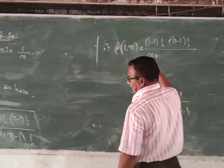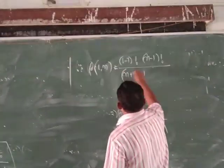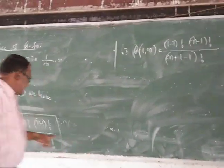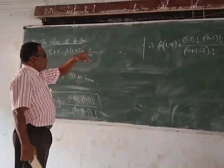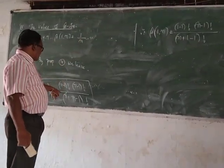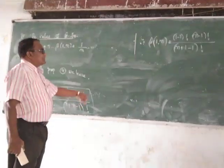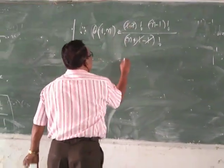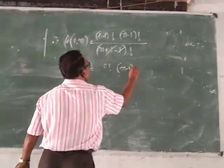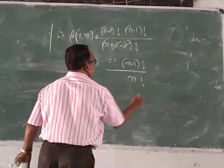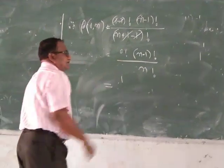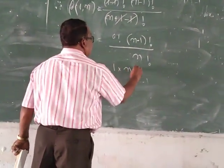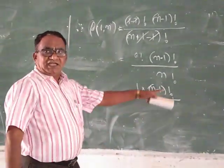This gives us (1-1)! · (n-1)! divided by n!. You can observe that (1-1)! = 0!, and we note that 0! = 1. So the expression becomes 1 · (n-1)! divided by n! which is just (n-1)! divided by n!.